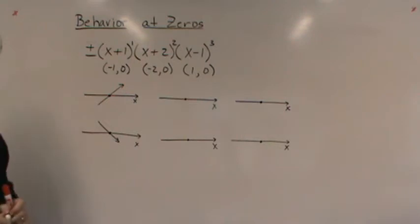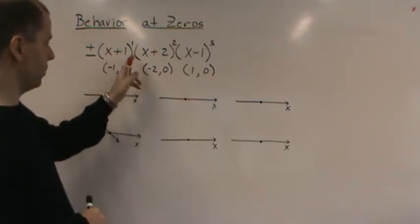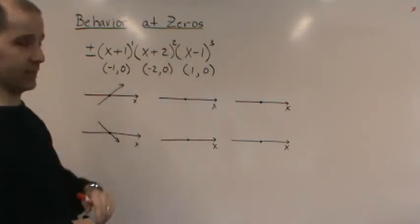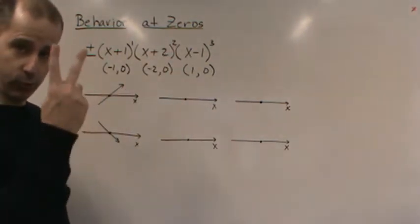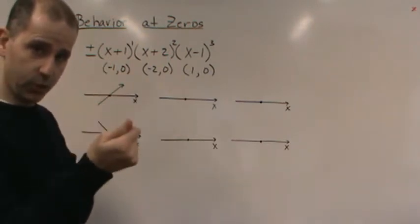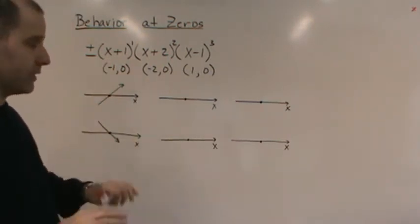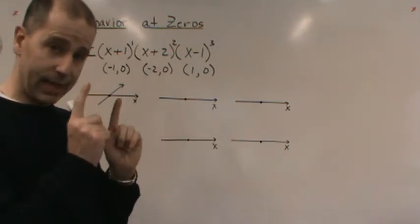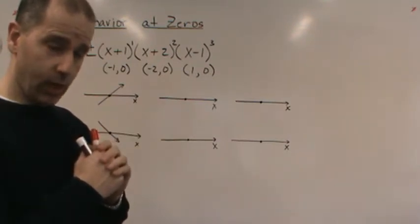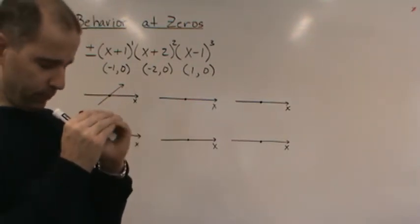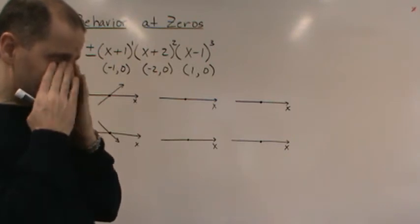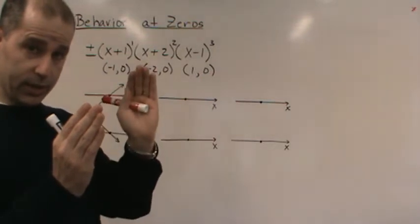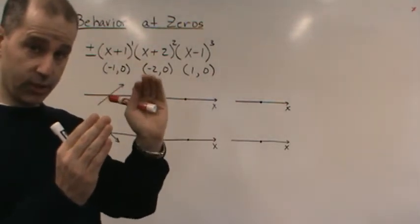What about a multiplicity of two? Let's look at what happens at the point (−2, 0) where the factor is squared — a repeated zero. If the multiplicity is two, the graph is going to touch but not cross the x-axis. It will be tangential to the x-axis at that point.